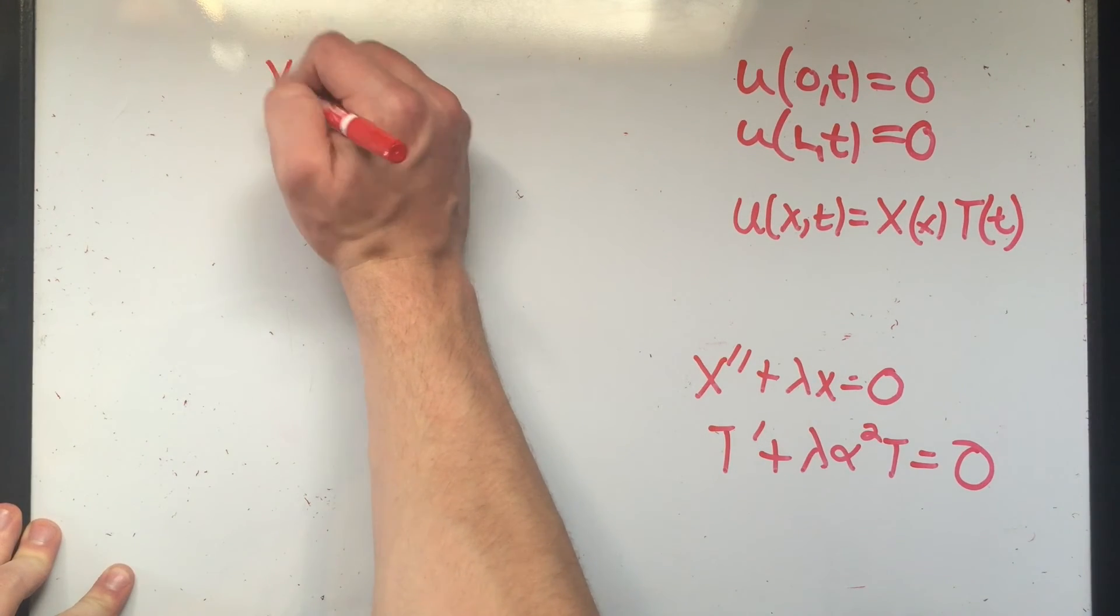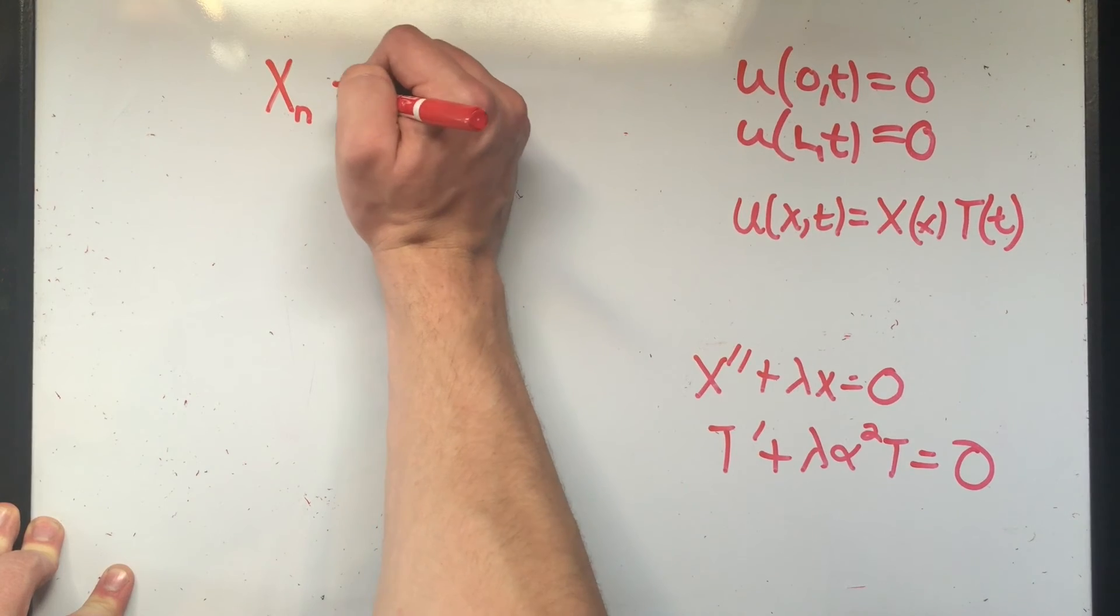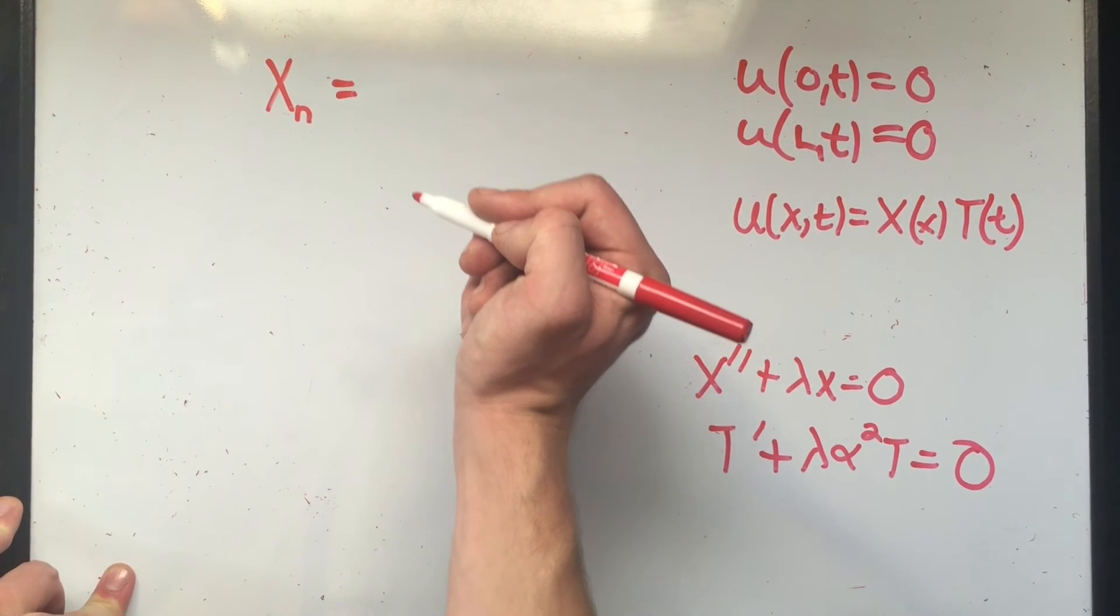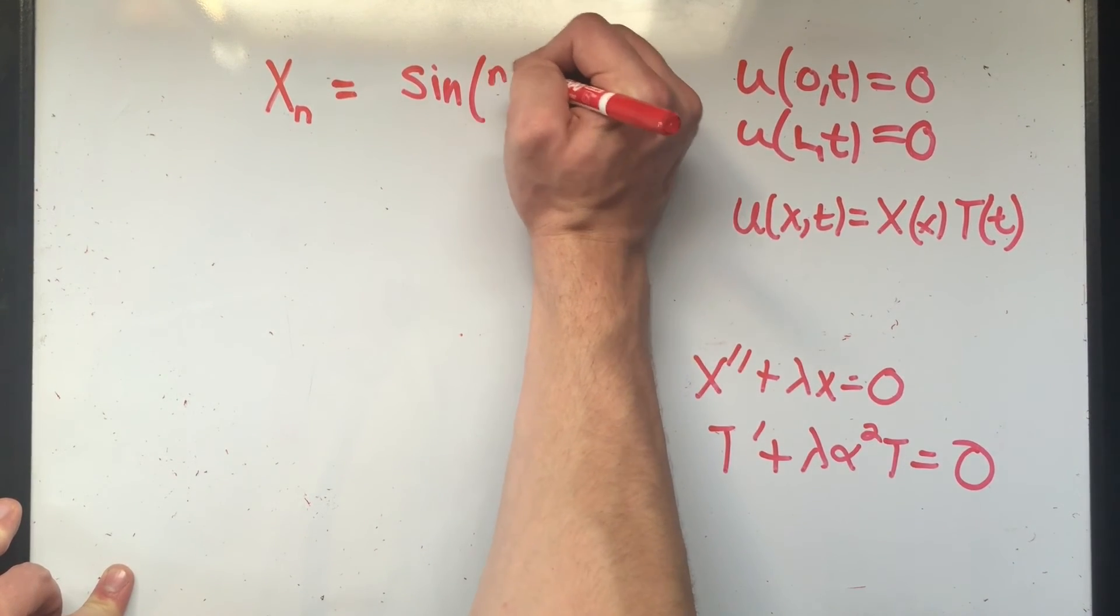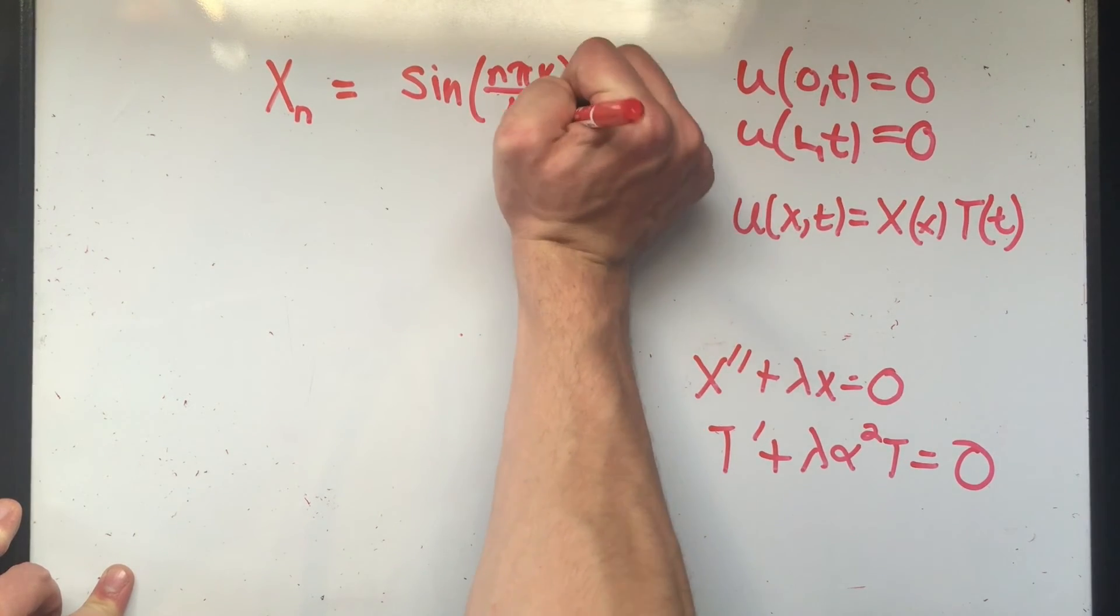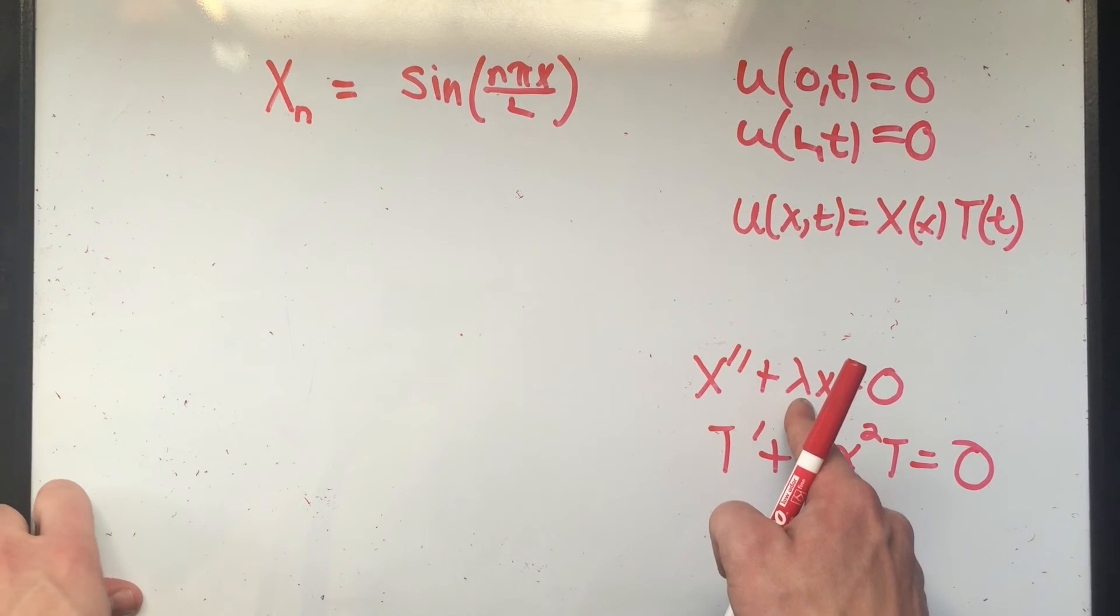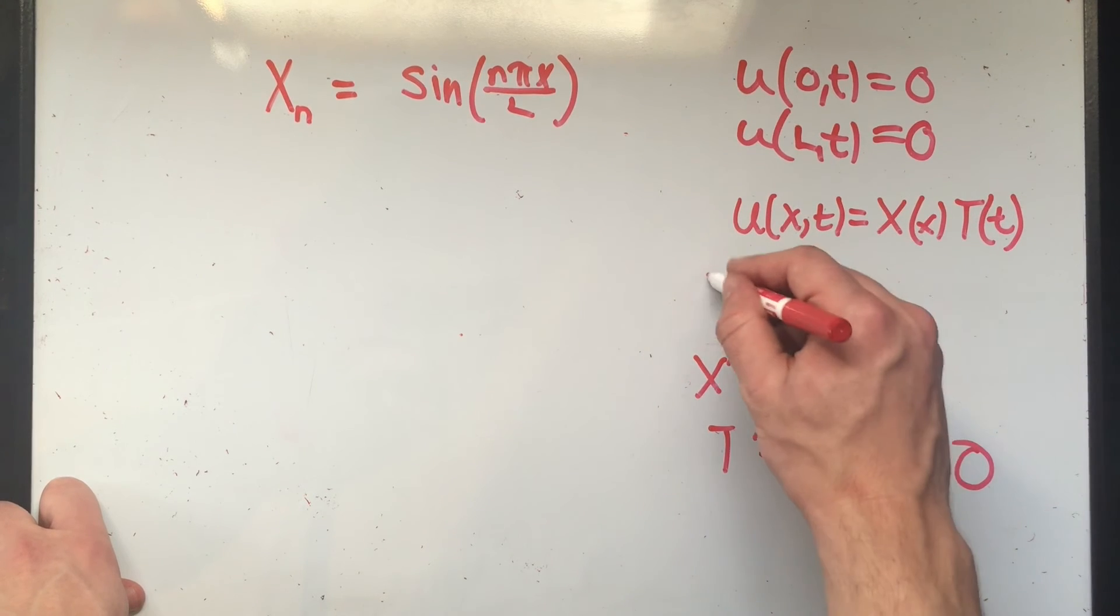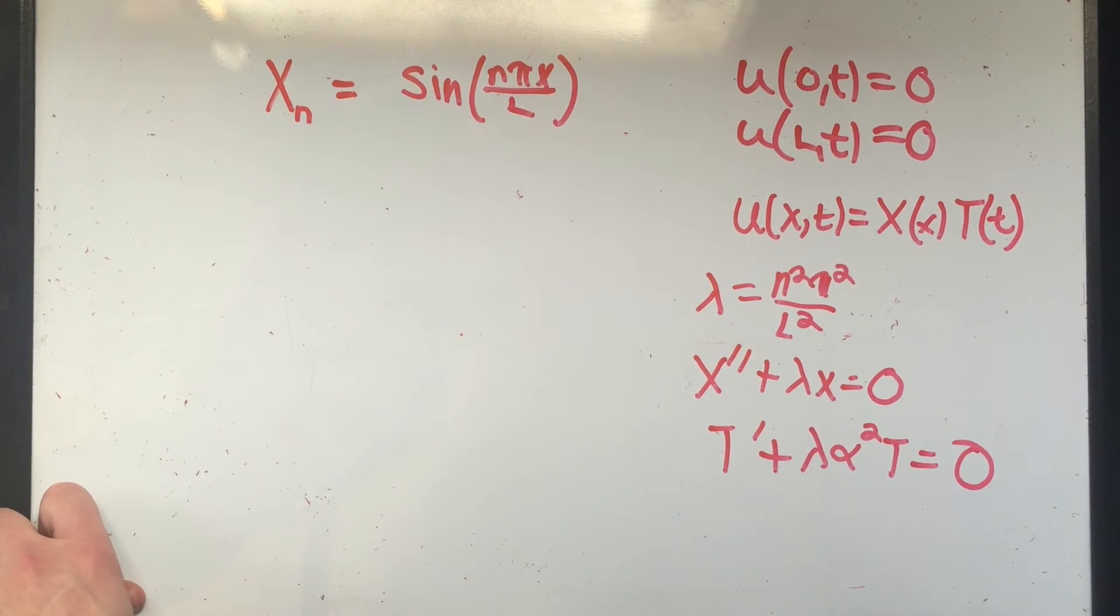So last time we got for this equation, let's see, we got that Xn, I have to do this sub n because if you remember in the last video, we got that our solution was periodic by pi. So we got that X was sine of n pi X over L. That's what we got with those initial conditions last time. And we also found that lambda was n squared pi squared over L squared, if you remember that. So if lambda is that, and this was from the last video, by the way, if you're very interested in where I got those values, you can go check out that video.